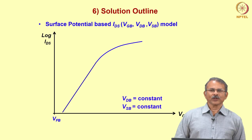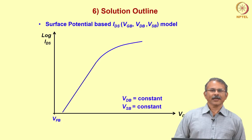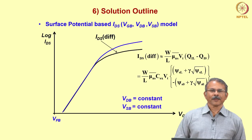Because you have to take into account both the transverse as well as longitudinal field effects on the surface mobility. If you do calculations using these expressions, you will get a behavior as shown: IDS on a log scale versus the gate-to-bulk voltage VGB.